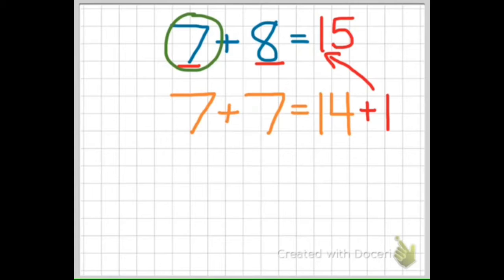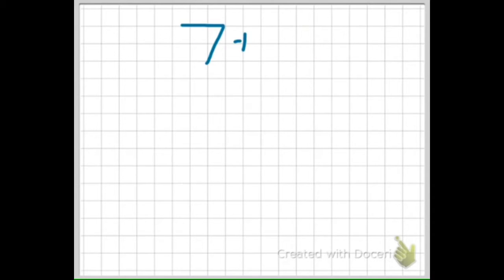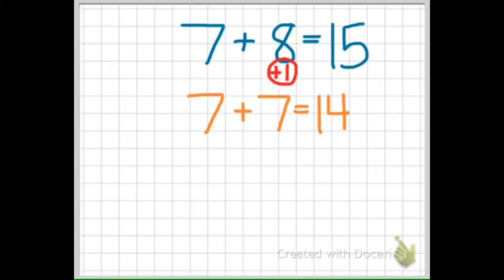So the rule for side-by-side is to take the smaller number and double it. Once you double the smaller number, you simply add one more to your sum to get the answer. The reason this works is because 7 plus 8 is one larger than the two 7s, and so 7 plus 8 is one larger than the doubles fact.